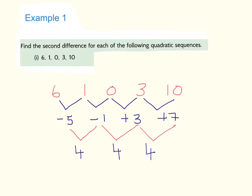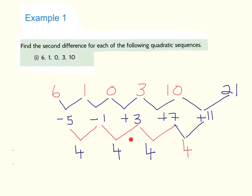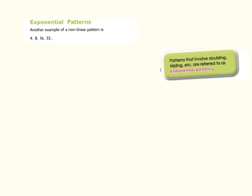To find the next number in this sequence, the next first difference will be 7 plus 4, which gives 11. So 10 plus 11 gives us 21 as the next term. That's how we find the next term in a quadratic sequence — you're constantly looking for the same constant in the second difference.